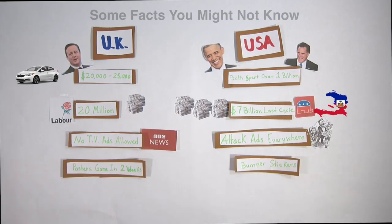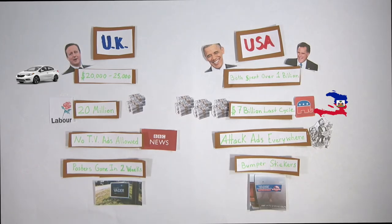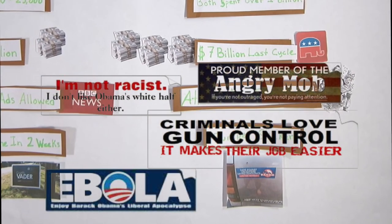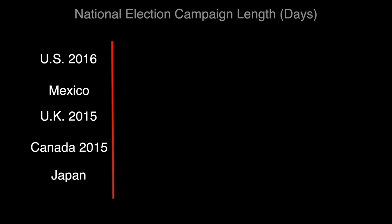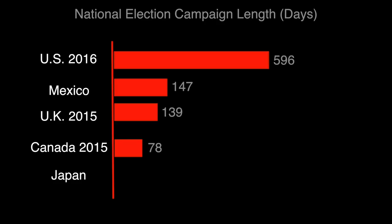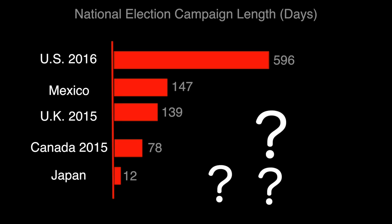In the UK, all posters must be removed within two weeks after the election. In the US, well, we have bumper stickers. The UK is so quaint with the process, but it makes you wonder — with the circus so large, how can a US citizen not be an informed voter? In fact, how can somebody not vote at all?